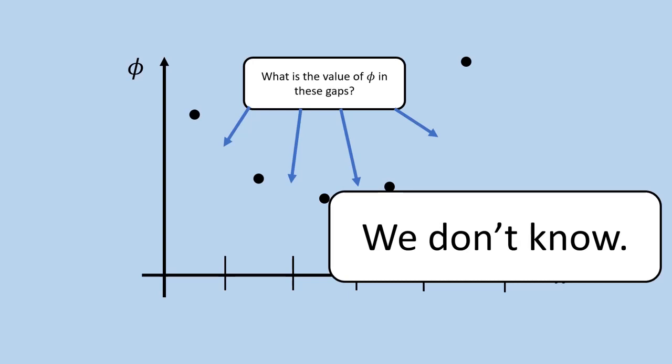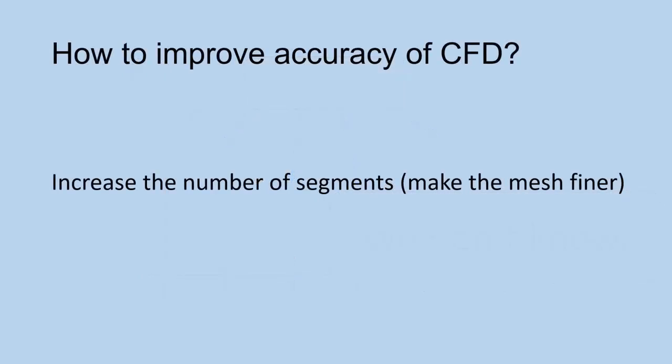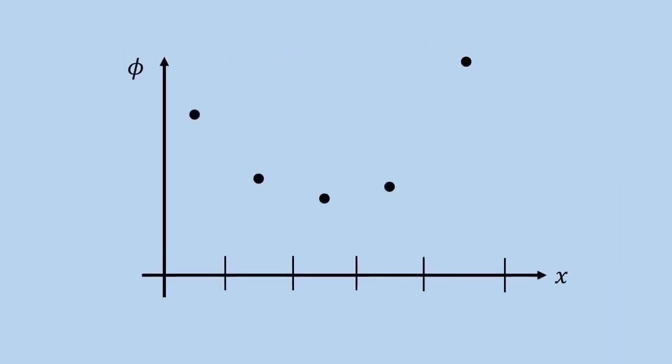Fortunately, we can get around this limitation simply by increasing the number of segments from the process of discretization. This is called mesh refinement, or simply making the mesh fine. So instead of starting out with 5 segments, we can instead start with 10 segments. Or even better, how about 20 segments? As you can see, by refining the mesh, we reduce the gap sizes, thereby reducing the uncertainty in the unknown segments.